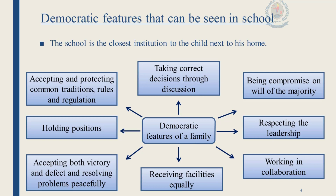There are many specific features that can be seen in a school in a democratic society, such as taking correct decisions through discussion, being compromised on the will of the majority, respecting the leadership, working in collaboration, receiving facilities equally, accepting both victory and defeat, resolving problems peacefully, holding positions, and accepting and protecting common traditions, rules, and regulations.